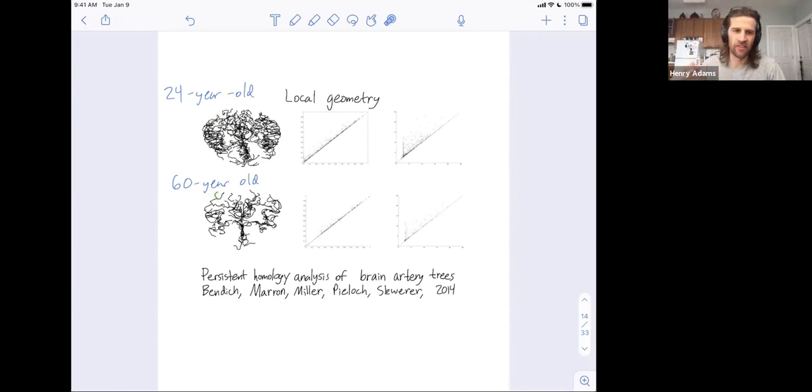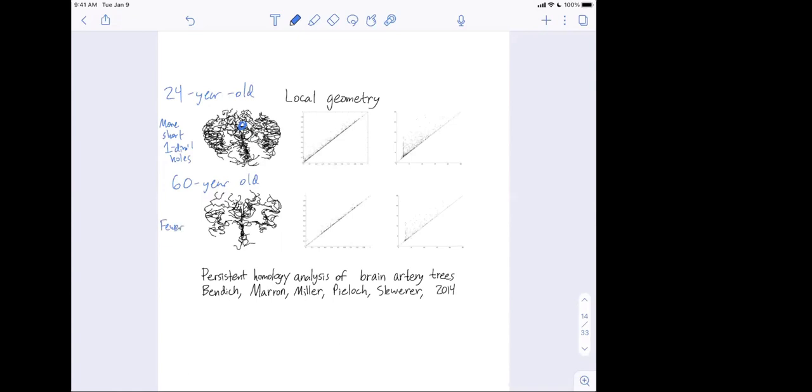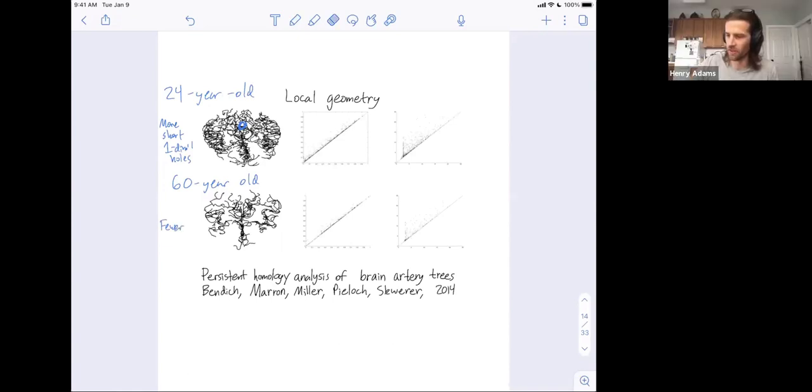Okay, so if you grew balls around these data points and looked at the connected components or the one-dimensional holes, you might conjecture that you get more short one-dimensional holes for the 24-year-old brain. And by short, I mean they might be these little holes that appear, but they could fill in soon afterwards. For the 60-year-old brain, maybe you expect fewer small little holes that disappear soon after they appear.